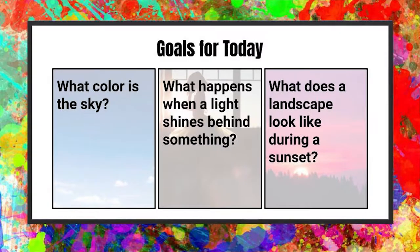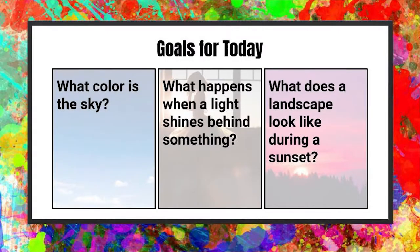We've got three goals today. Number one, we need to know what color the sky is — and it's not what you think. Number two, we need to know what happens when light shines from behind something. And number three, we need to know what a landscape looks like at sunset.